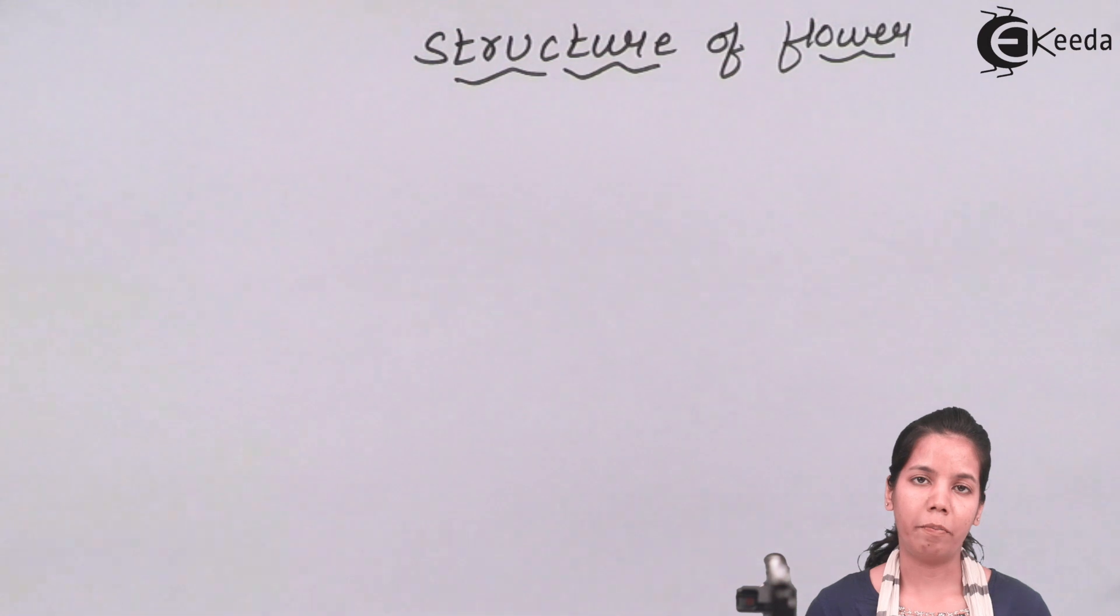So there are two types of petals or corolla: one is polypetalous and another is gamopetalous. Now when I say gamopetalous, the corolla would be fused in such a manner that you cannot remove a single petal. An example is your China rose or sunflower, whereas polypetalous can be removed.